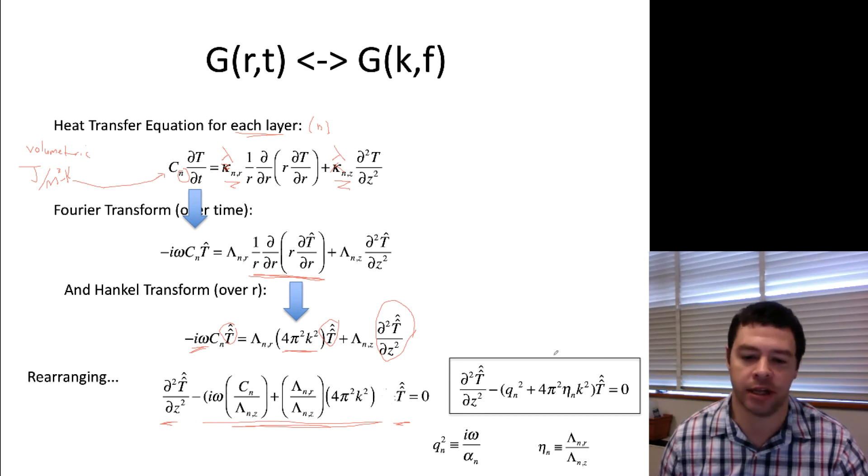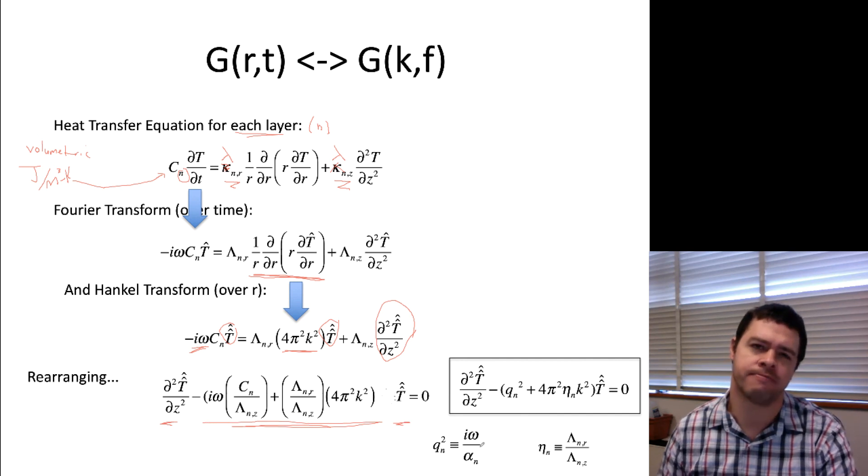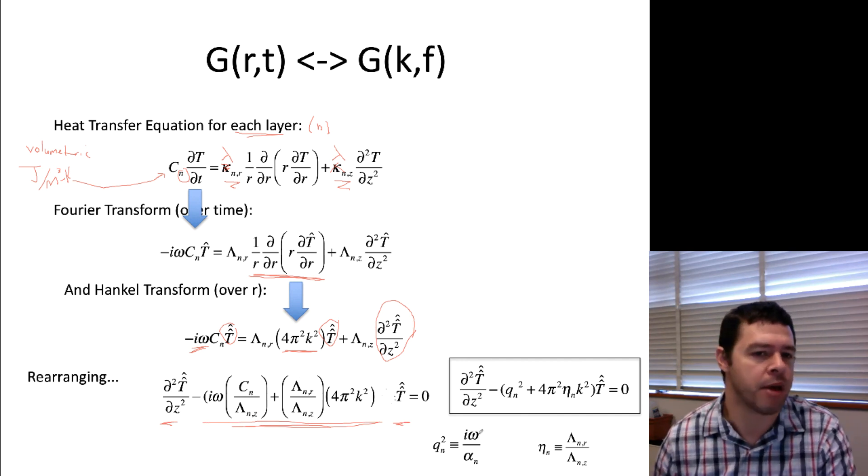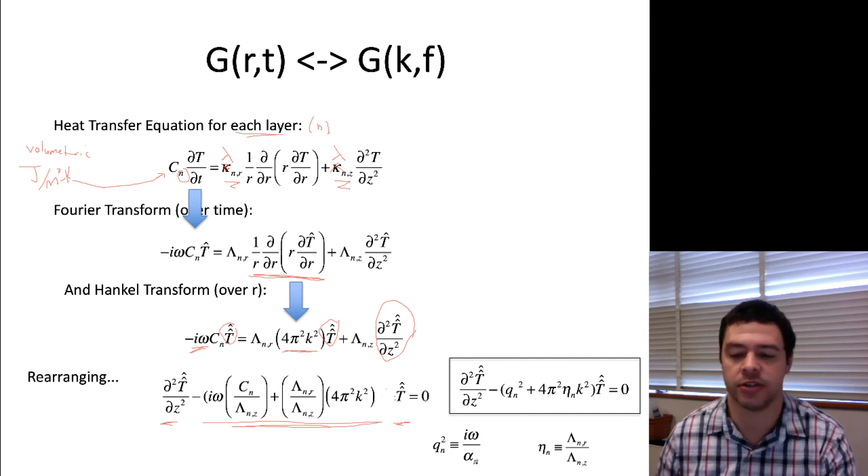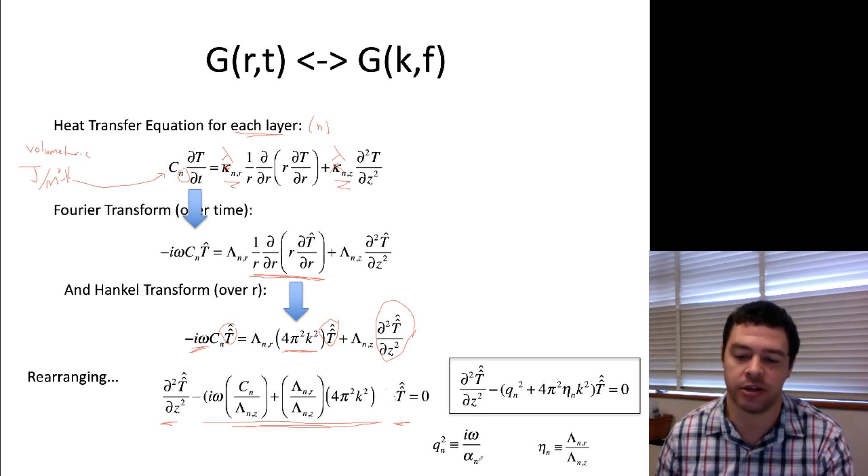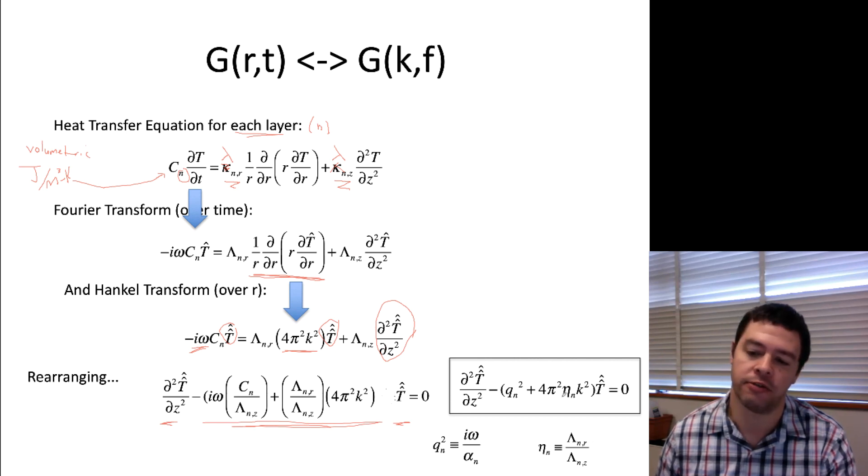I can define, to make this thing look a little bit simpler, I can define two side variables. One that I'll call Q-squared, which basically just describes the penetration depth. If you look at what this thing is, this will describe what's called the penetration depth squared, and then one over the penetration depth squared.